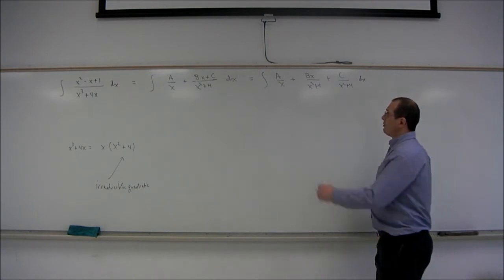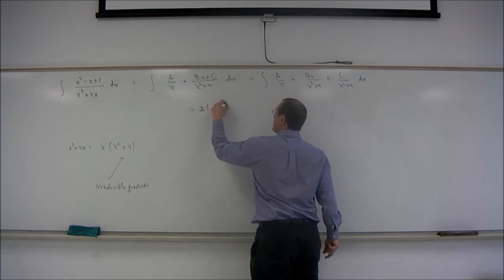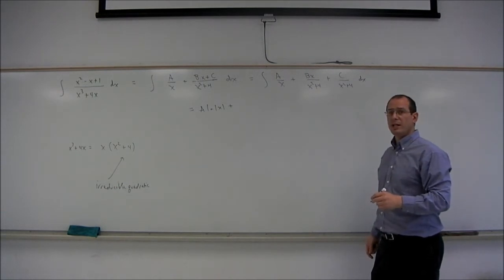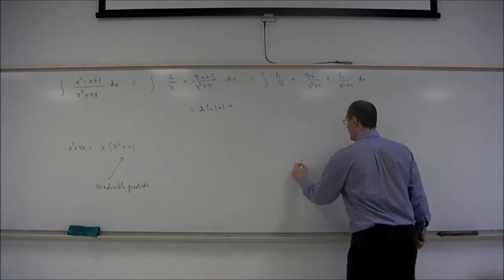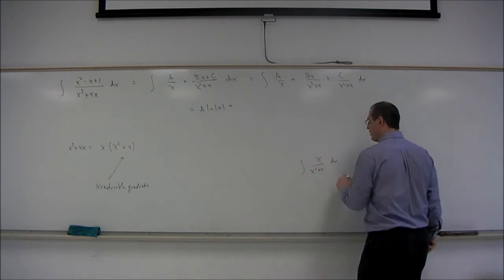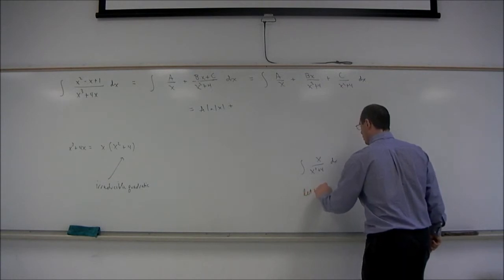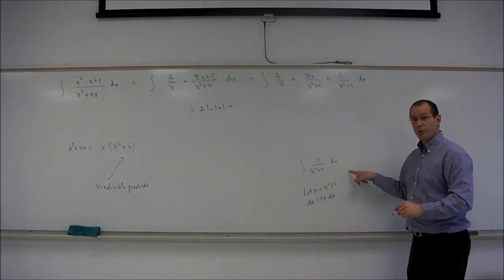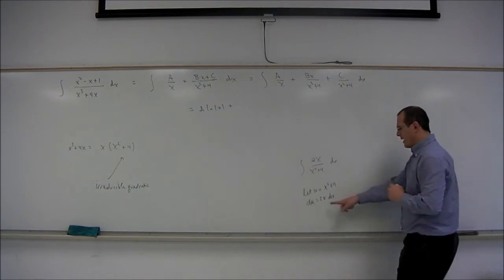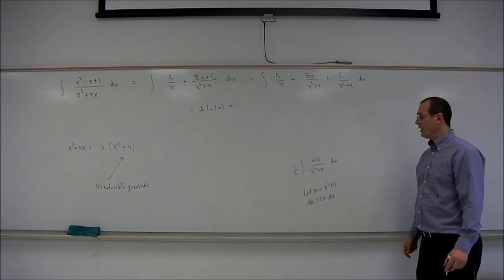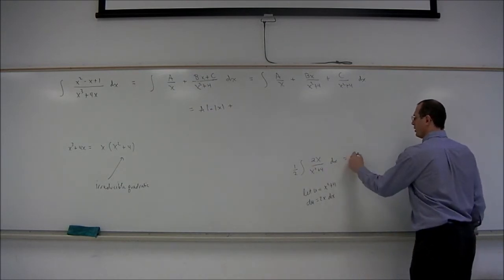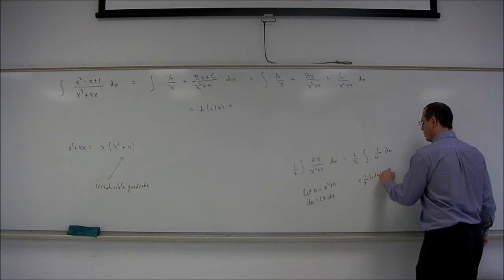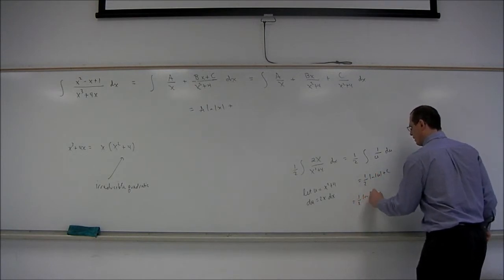To integrate these, the first one will integrate to give us A times the log of x. Now the middle one will integrate using a u-substitution. The integral of x over x squared plus 4 — if we let u equal x squared plus 4, then du equals 2x dx, which is basically the numerator. We put a 2 in the numerator and a 1/2 in front, giving us 1/2 the integral of 1 over u du.